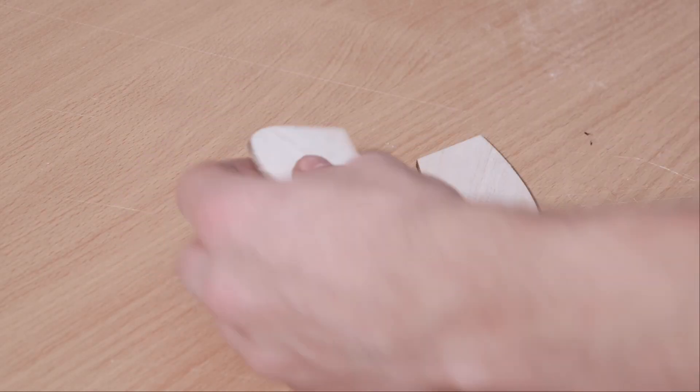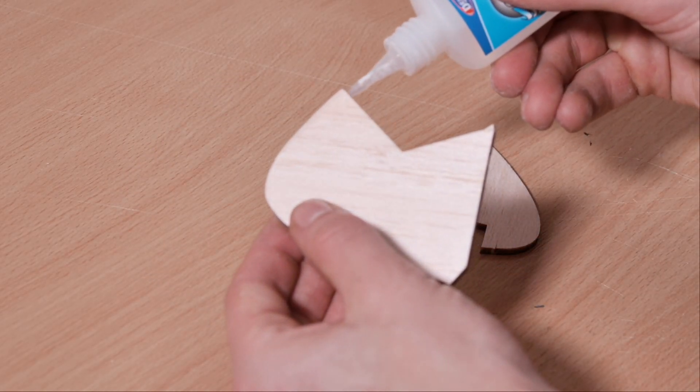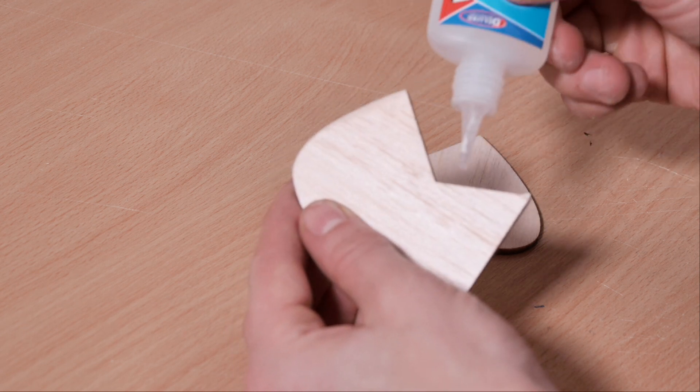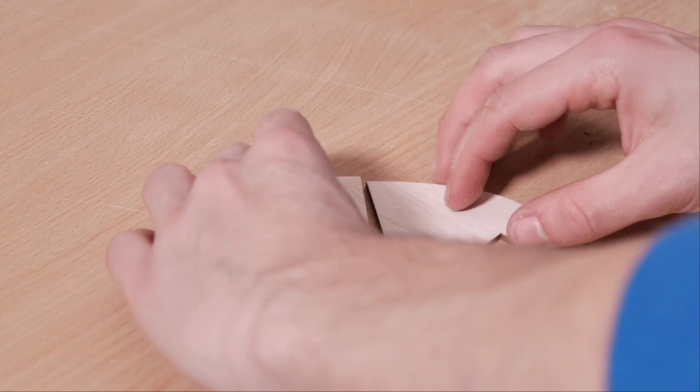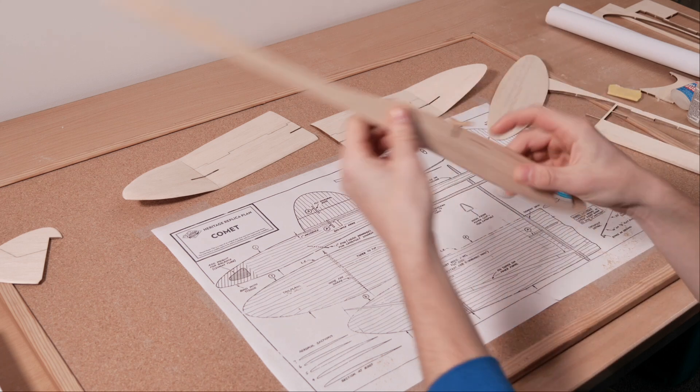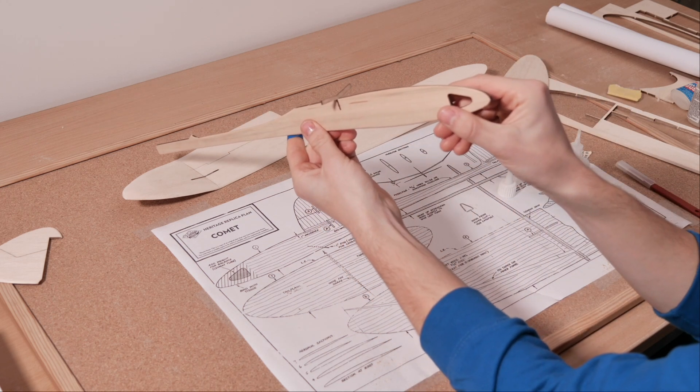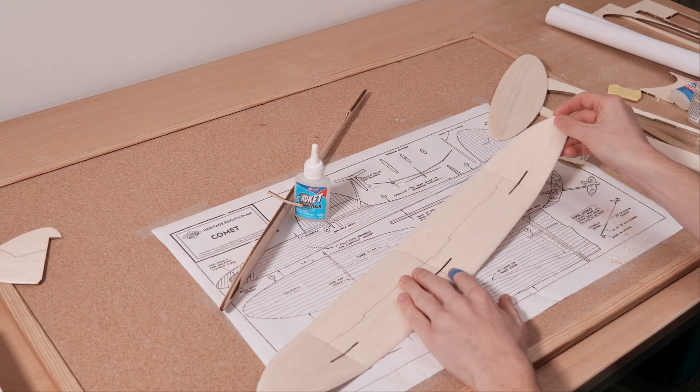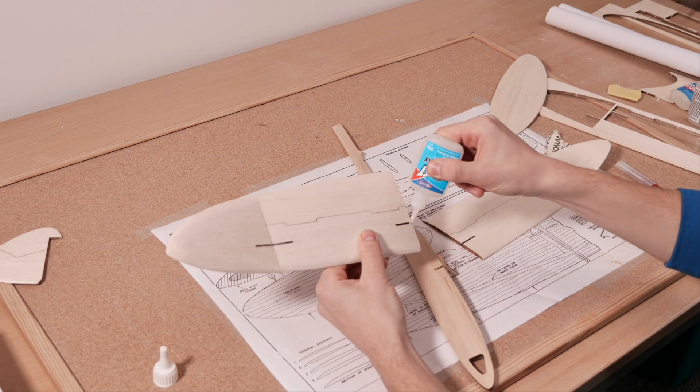After this, you can assemble the tail parts and also curve them to shape with sandpaper. Helpfully, there is also a ply piece for connecting the wing to the fuselage. This creates a super strong join and ensures that you get perfect alignment. Take your time and don't use too much glue here.